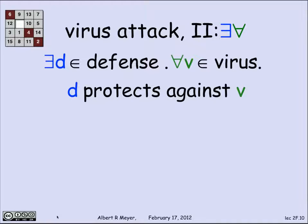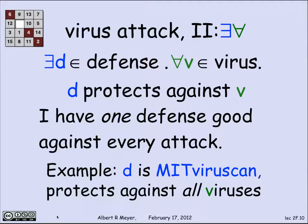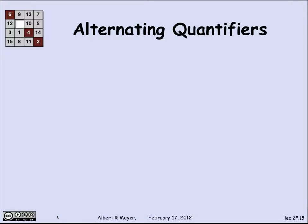Now let's reverse the quantifiers. Suppose there is one defense good for all viruses: 'there exists a D such that for every virus V, D protects against V.' For example, if D is MIT virus scan and it protects against all viruses, that's wonderful — one defense good against every attack. That's what we want because it's a lot cheaper.